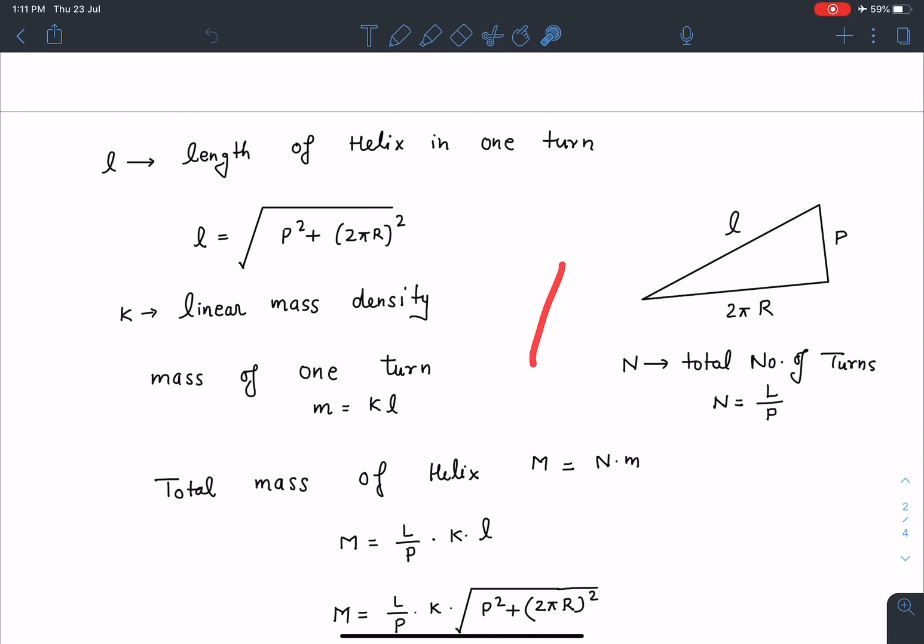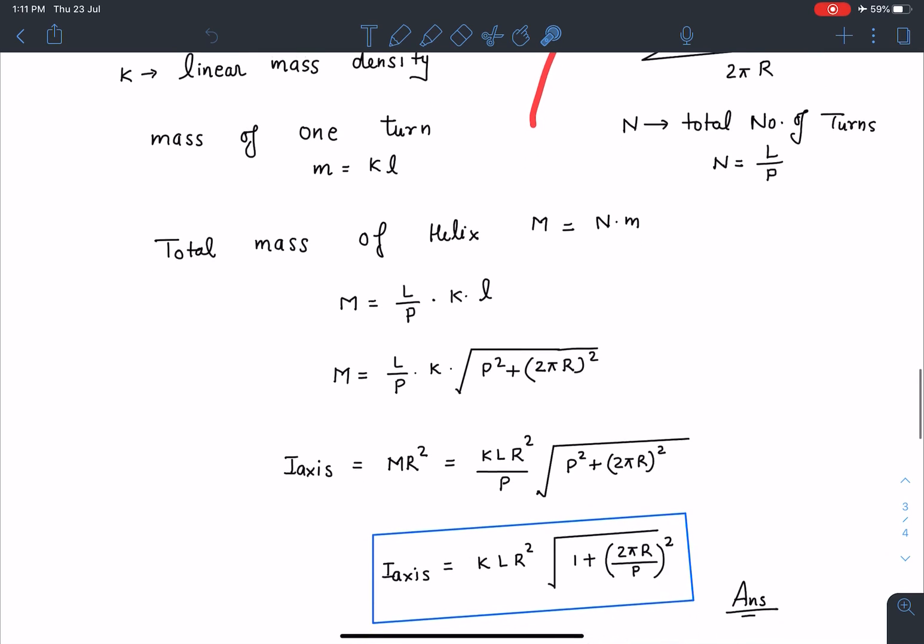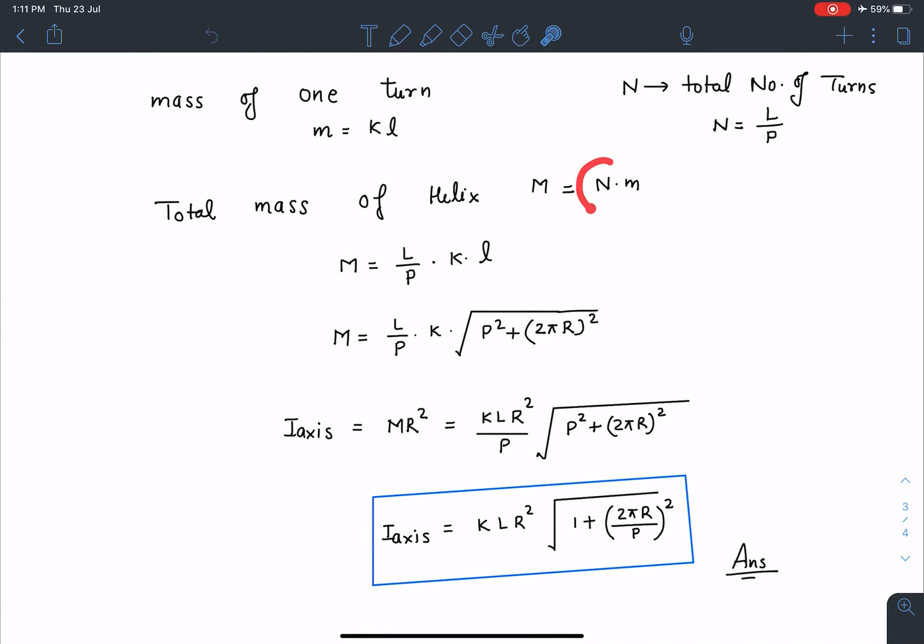So here I'm going to get the total mass of the helix as total number of turns multiplied by mass of one turn. So if we substitute the value here, number of turns are L/P and mass of one turn is Kl. Let's substitute the value of this l here and we get the total mass as (L/P) × K × √(p² + (2πR)²).